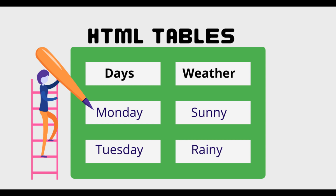How are you developers? I hope you are fine. Today we will be learning about tables in HTML, so stay tuned. In HTML, tables are a fundamental part of web development and they are used to display data in a structured format. Tables consist of rows and columns organized into a grid-like structure. Tables are commonly used for presenting data such as schedules, pricing, lists, or any other information that needs to be organized into rows and columns. So let's dive in.